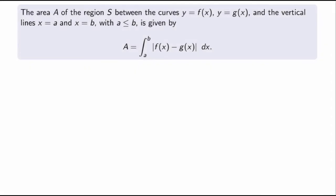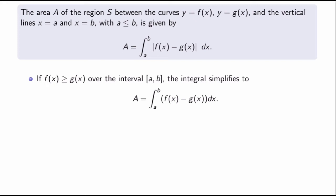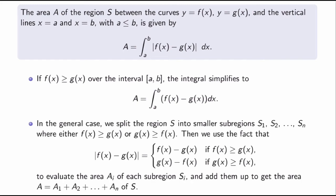To summarize: the area a of a region S between the curves y equals f of x, y equals g of x, and vertical lines x equals a and x equals b, is given by the definite integral from a to b of the absolute value of f of x minus g of x dx. If f of x is greater or equal to g of x over the whole interval, you can drop the absolute value. In the general case, split the region into smaller sub-regions S1 through Sn where either f of x ≥ g of x or g of x ≥ f of x, replace the absolute value with the appropriate expression, calculate the definite integrals, and add up the areas.